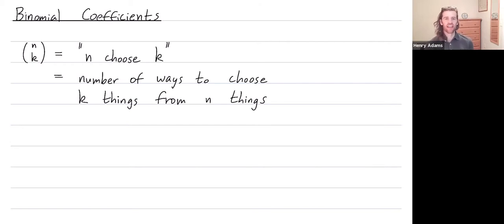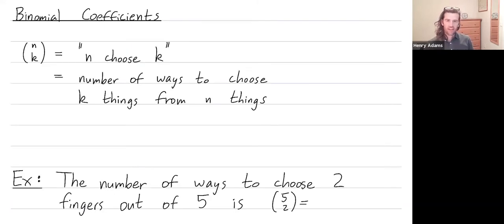So the binomial coefficient n choose k is defined as the number of ways to choose k things out of a collection of size n and we're not paying attention to order. It's denoted n choose k with this symbol and out loud you just say n choose k. So let's begin with my favorite example. What's the number of ways to choose two fingers out of five? Well that's five choose two because we're choosing a set of two fingers out of my hand of five fingers and let's try to count it.